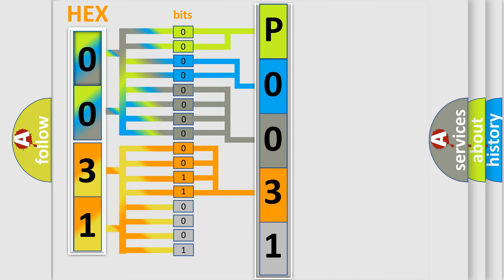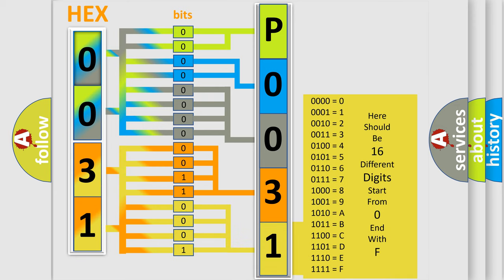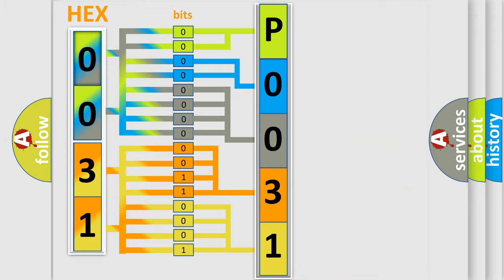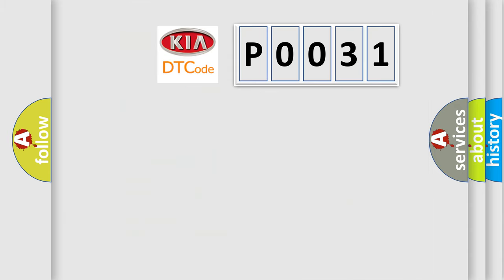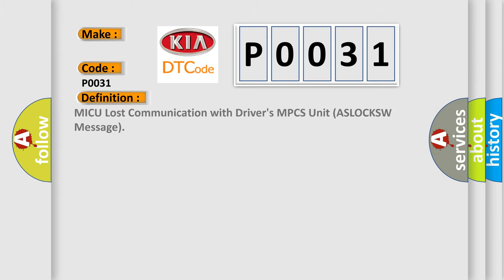A single byte conceals 256 possible combinations. We now know in what way the diagnostic tool translates the received information into a more comprehensible format. The number itself does not make sense to us if we cannot assign information about what it actually expresses. So, what does the diagnostic trouble code P0031 interpret specifically for KIA car manufacturers? The basic definition is: MICU lost communication with driver's MPCS unit ASLOCKSW message.